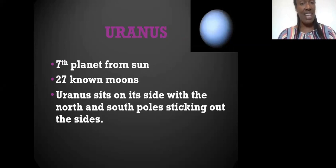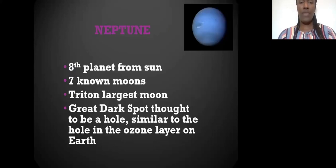Uranus is the special planet. It sits on its side. North and south poles stick out its side.